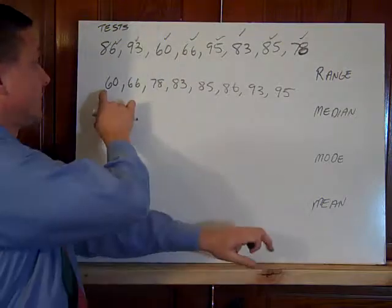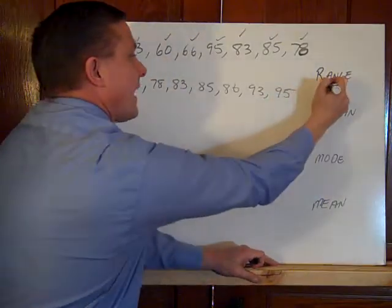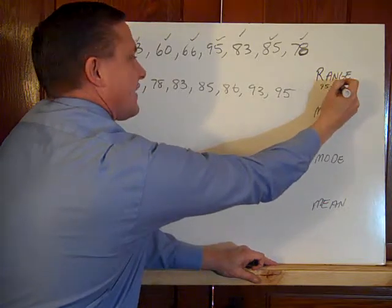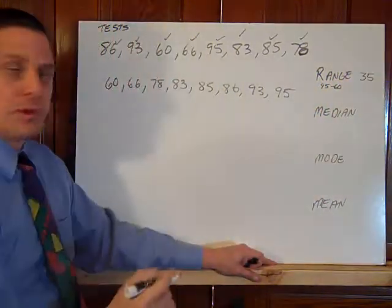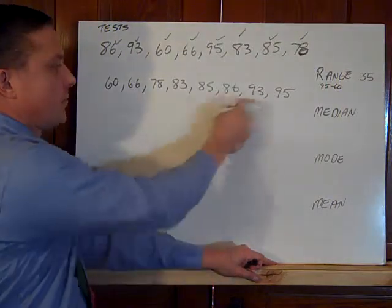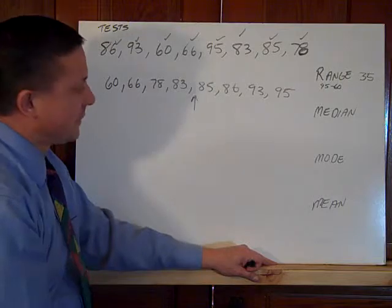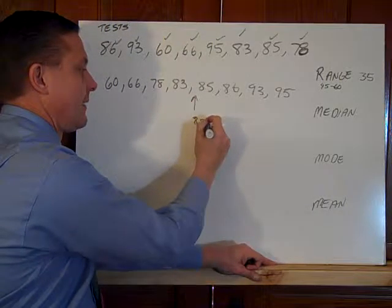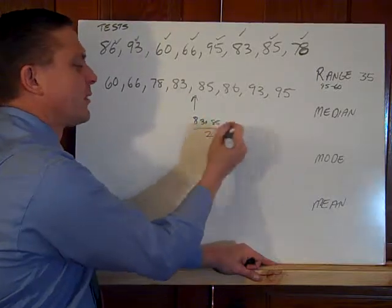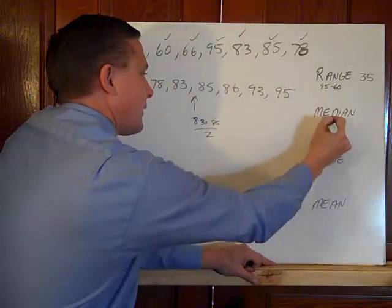The range. Well, this guy had a low score of 60 and a high score of 95. 95 minus 60. I think the range of scores is 35 this time. The median. Four numbers, four numbers. The median is between 83 and 85. You've got to average this. So it's 83 plus 85 over 2. Or what's the middle point of 83 and 85? 84.